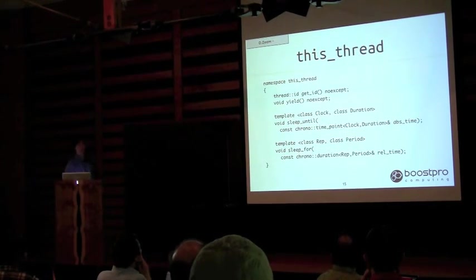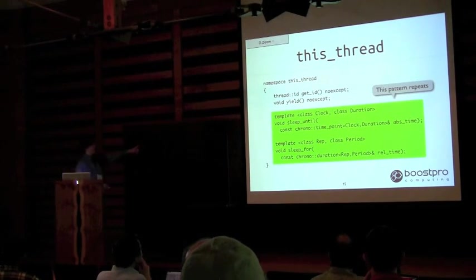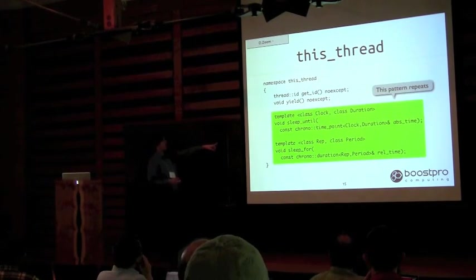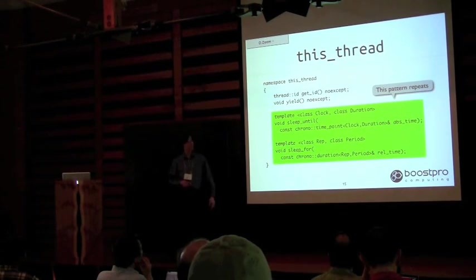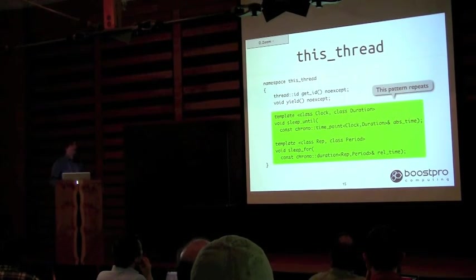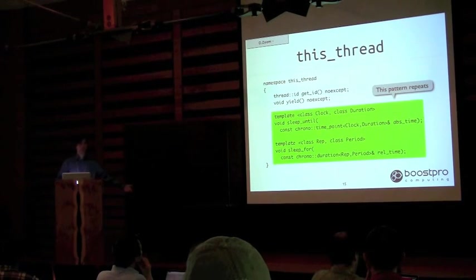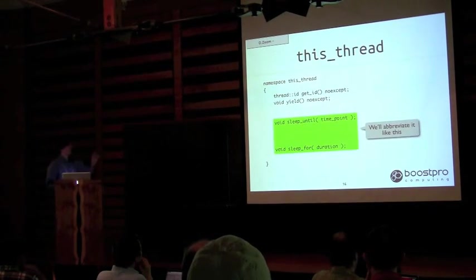std::this_thread, similar to boost::this_thread, is a namespace that gives you access to thread details of the current thread. You can say: sleep until a certain time point from the chrono library, or sleep for a certain duration. This pattern repeats — it occurs in many places in the threading library anywhere you'd decide between blocking, not blocking, or blocking for a specific amount of time. You'll see methods that take these exact data structures.